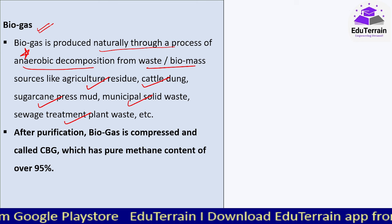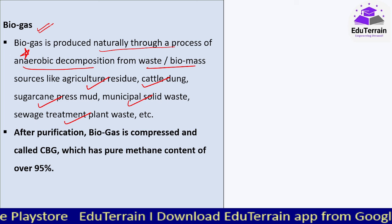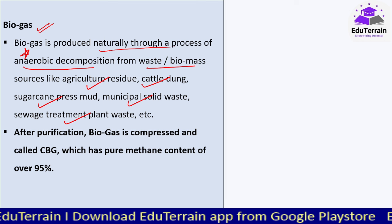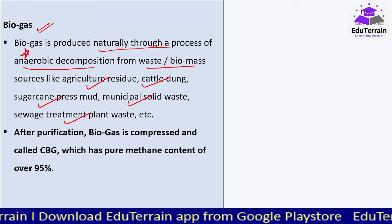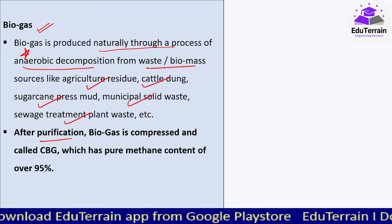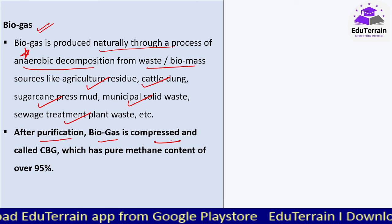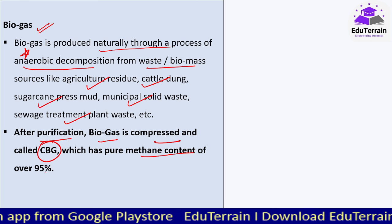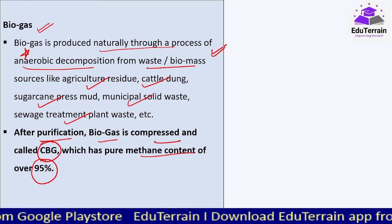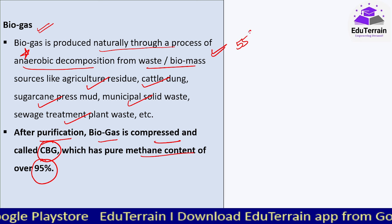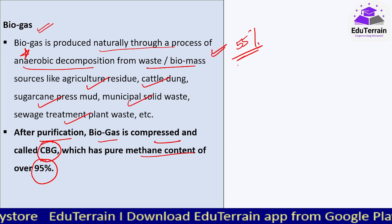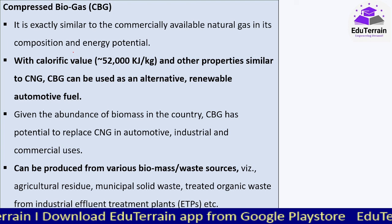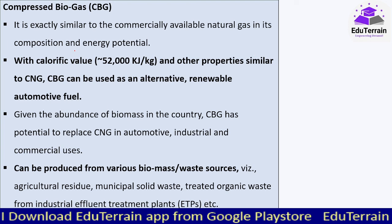Whatever gas is generated during this decomposition process is biogas. Pure biogas from cattle dung contains close to 55 percent methane, which is highly inflammable — that is why we use it for kitchen purposes and more. After purification, this biogas can be compressed, and this is called compressed biogas, which has a pure methane content of 95 percent compared to 55 percent in regular biogas.